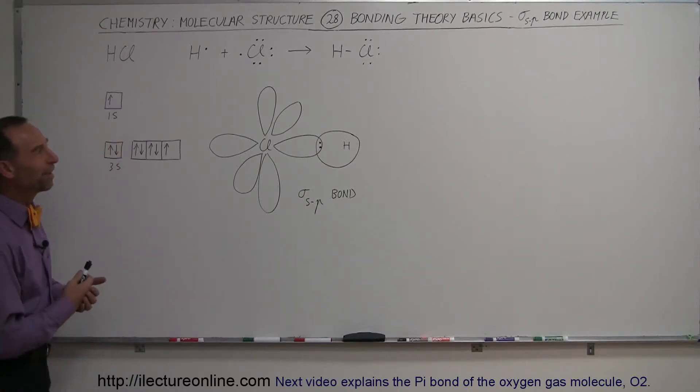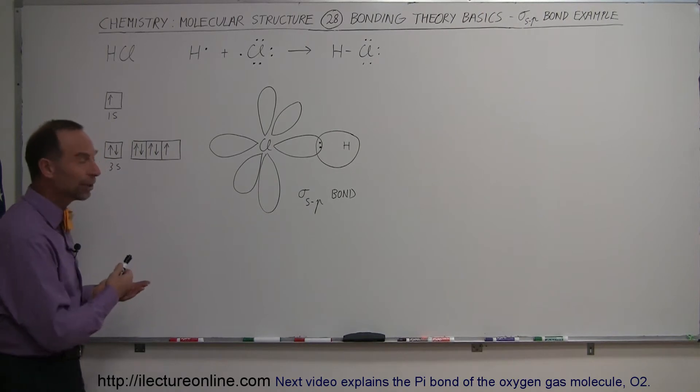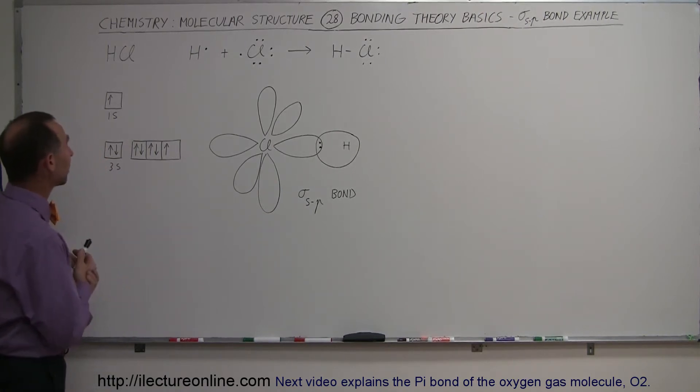And here we have an example of a sigma-sp bond. That means a sigma bond between an s orbital and a p orbital. And a good example for that would be HCl, hydrochloric acid.